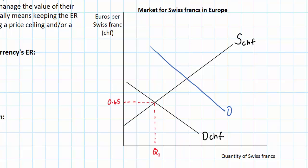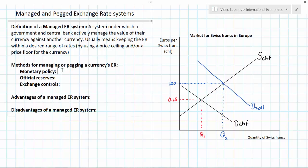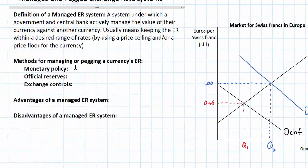I'll label this D2011, because it was during 2011 when the franc reached nearly 1 euro per franc. This is when the Swiss government and Swiss National Bank decided to intervene in the forex market to devalue the franc, using two of the three standard tools for managing or pegging a country's exchange rate against another. The first tool the Swiss National Bank employed was aimed at bringing down the value of the Swiss franc to help Swiss exporters.